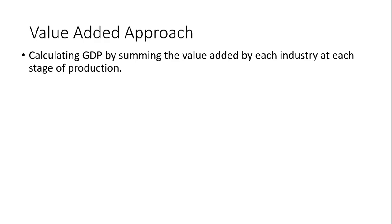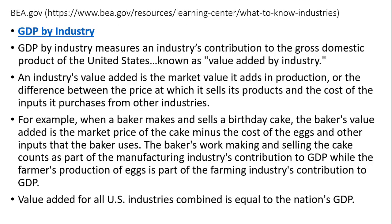The value-added approach is calculating GDP — gross domestic product — by summing the value added by each industry at each stage of production. This is from the Bureau of Economic Analysis website, bea.gov. They have something called GDP by industry, which is just value-added by industry. GDP by industry measures an industry's contribution to GDP, and again, it's known as the value-added by industry.